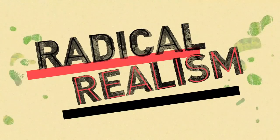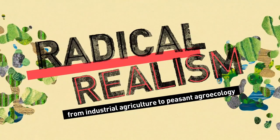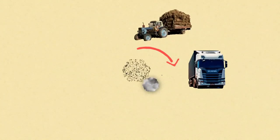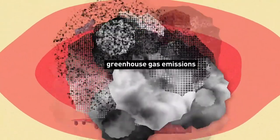Radical realism. From industrial agriculture to peasant agro-ecology. Today's agro-industrial food systems are one of the biggest sources of greenhouse gas emissions.